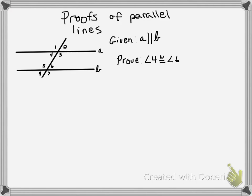We're going to be moving away from proofs of congruent triangles and moving into doing proofs of different things. Here, we're going to talk about how to prove that angle 4 is congruent to angle 6 when we have parallel lines.